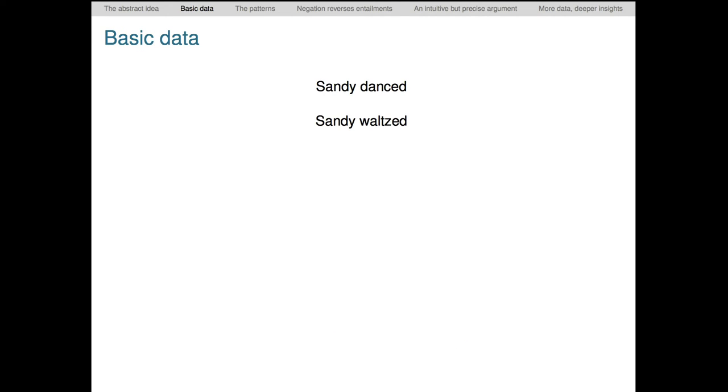Okay, with those concepts in hand, let's start to explore our semantic intuitions. Here's the pair of examples we just looked at. Sandy waltzed entails Sandy danced, hence the upward arrow. But Sandy danced does not entail Sandy waltzed, hence the downward arrow with the slash through it. Now let's look at a more complex case. This one involves the quantificational determiner a. The top sentence is a student danced, the lower left sentence is a Swedish student danced, and the lower right sentence is a student waltzed.